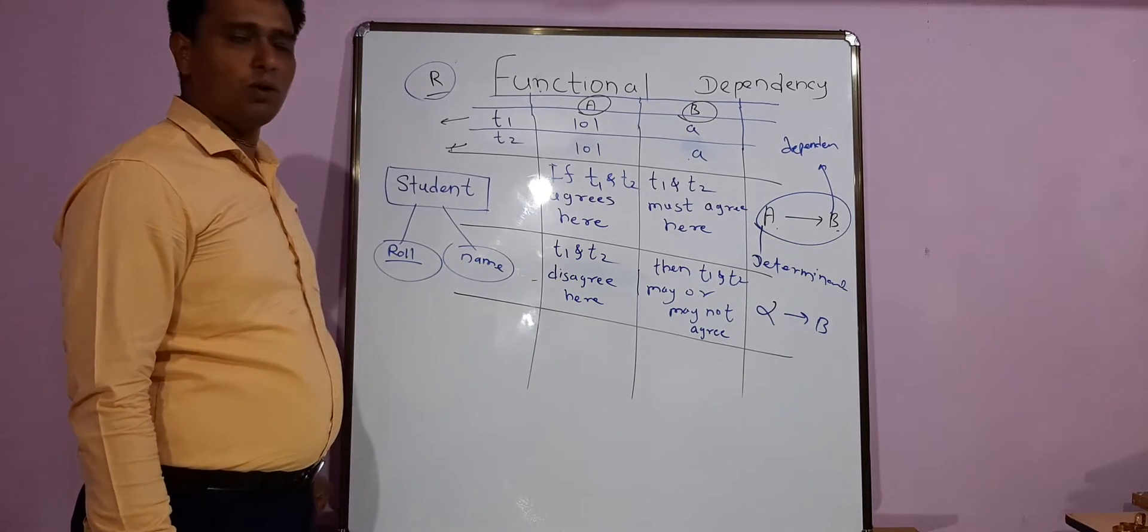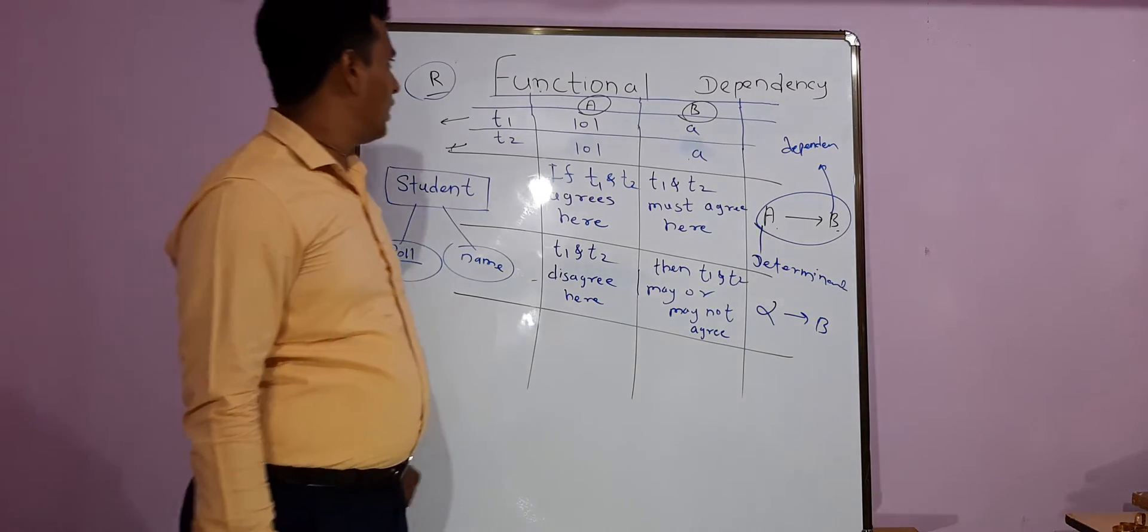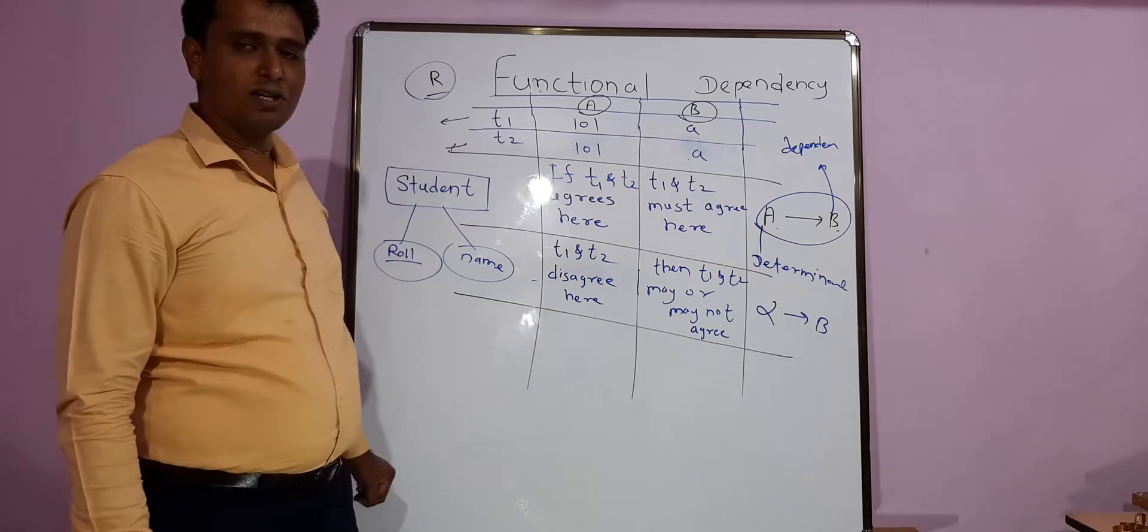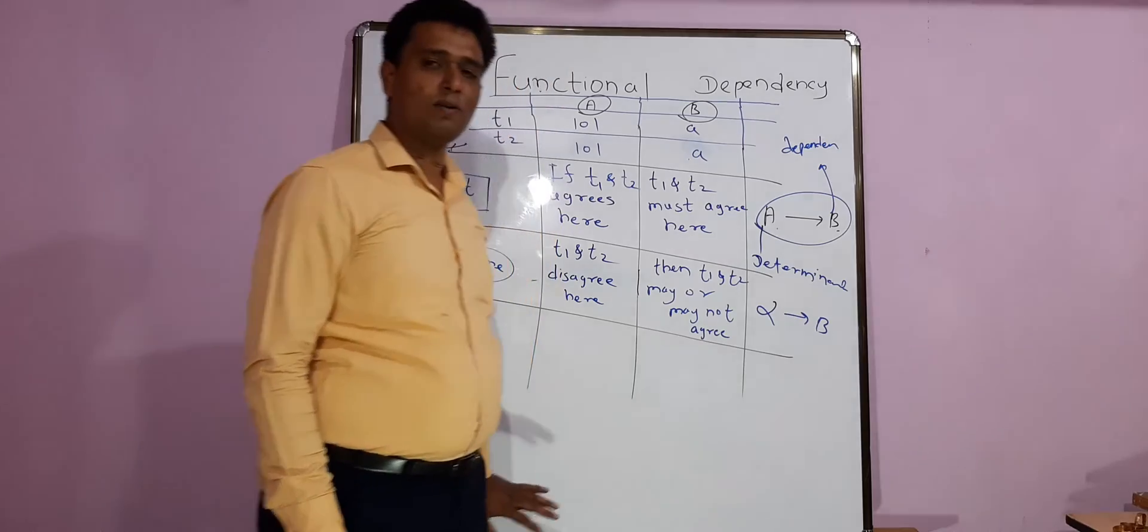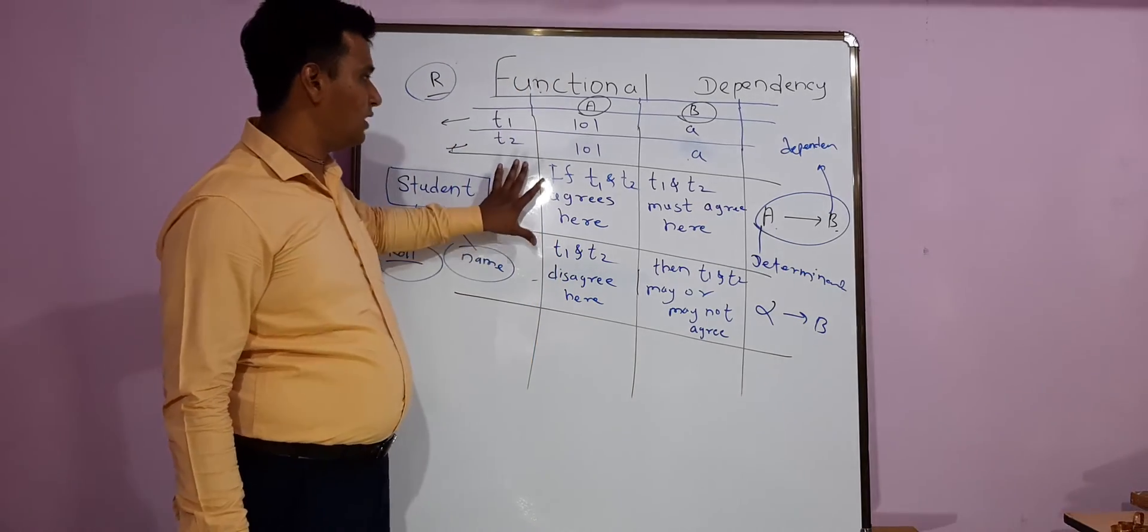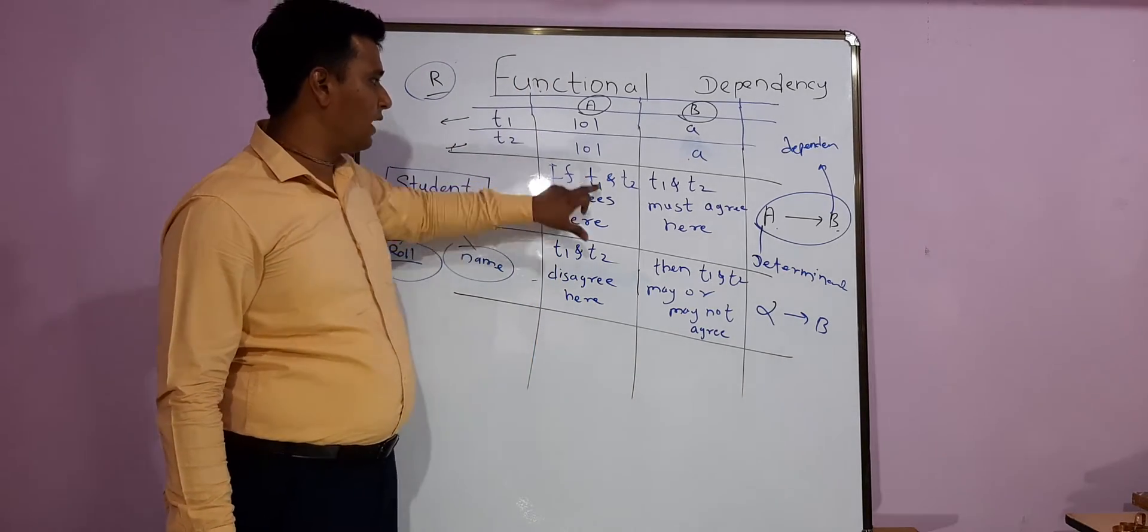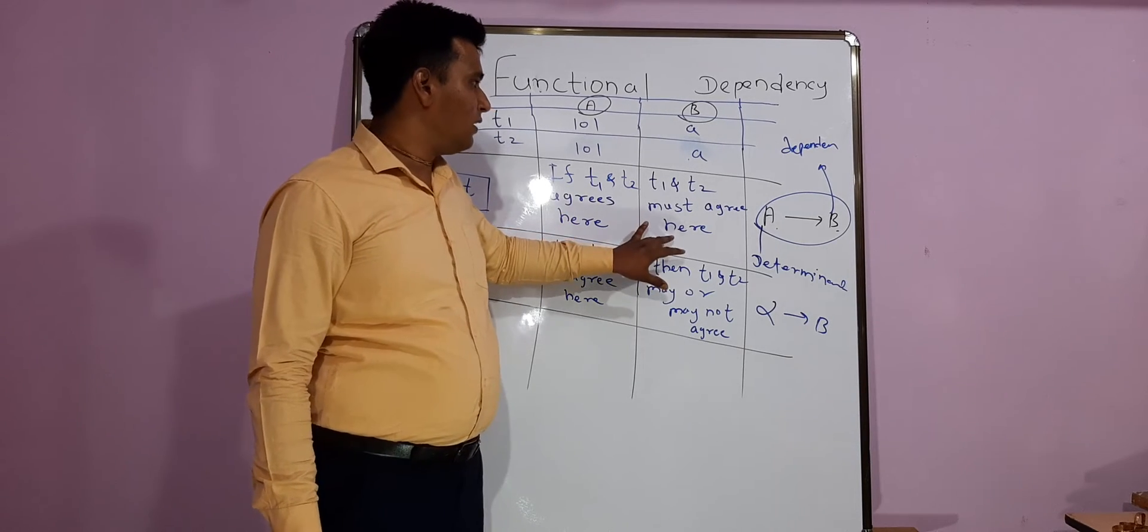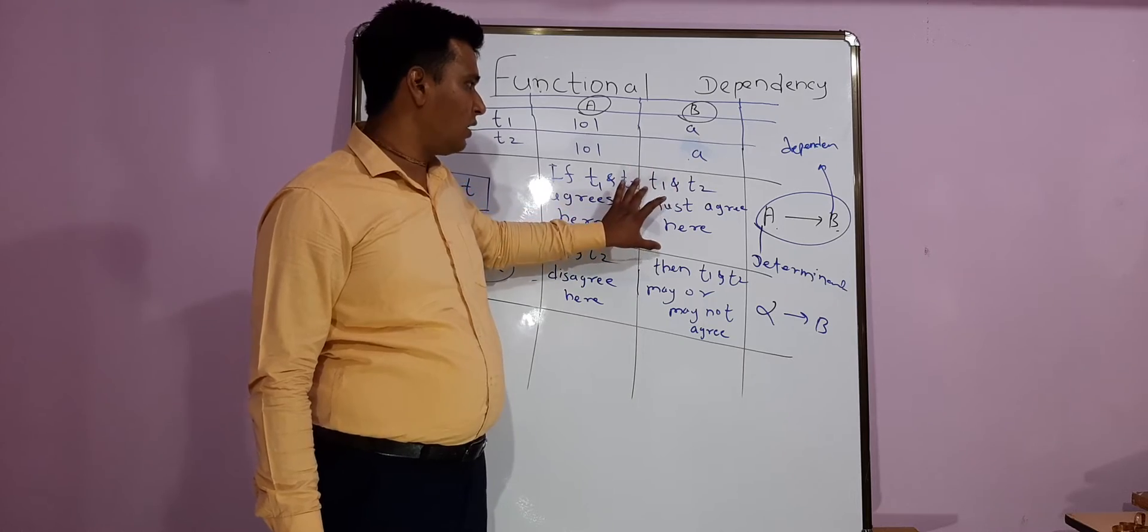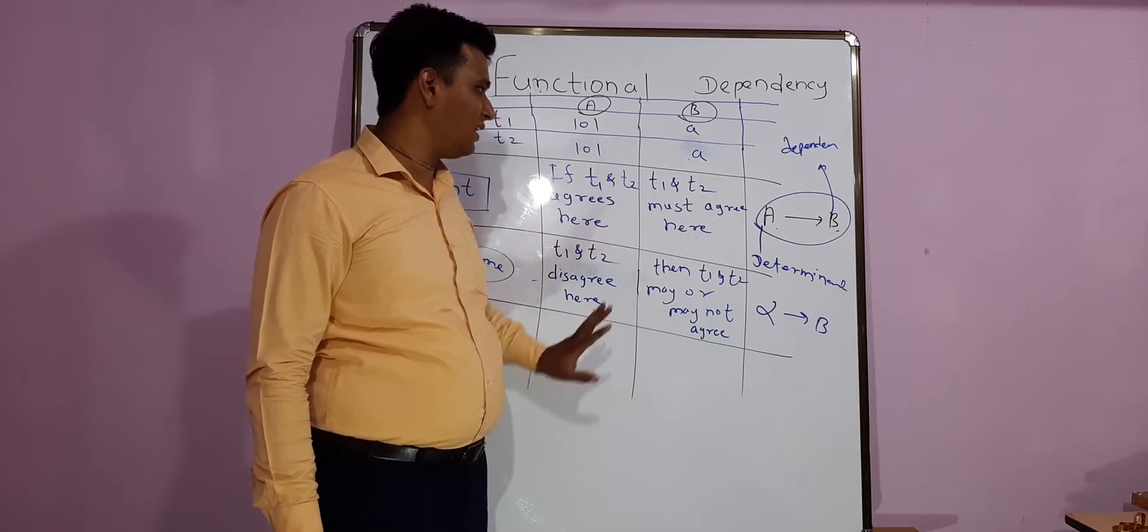But now if you want to say a given relation, given table is having functional dependency A determines B, if you want to confirm this, then how to find out? The first way is, understand here what I have written. If T1 and T2 agree here, then in different tuples of the same relation, T1 and T2 must agree here.